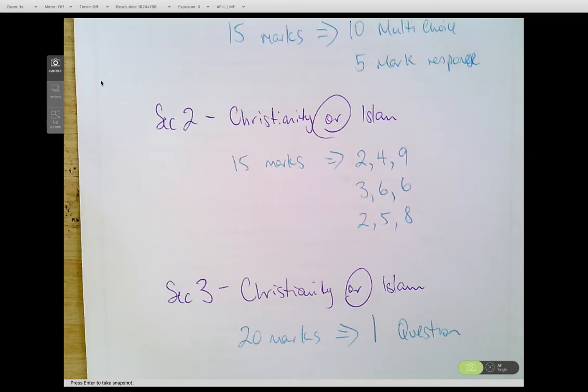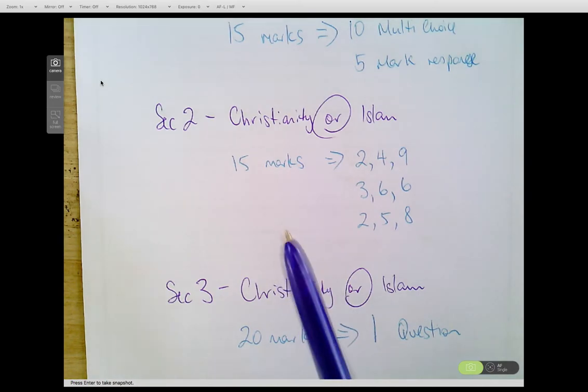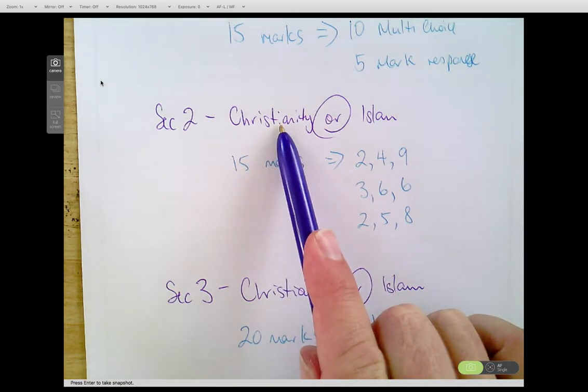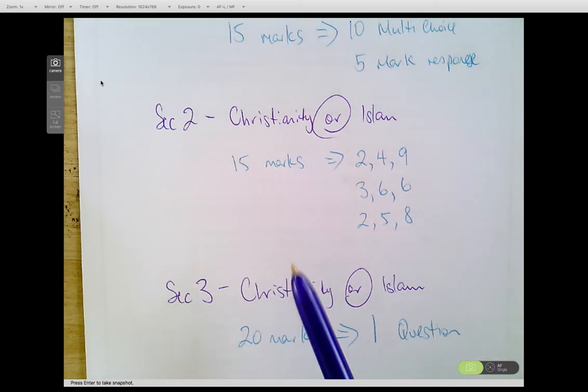We have to expect that the key verb in this is going to be explain or higher. So when we explain, we need to show cause and effect. It might ask for impact, so before and after. It might ask to discuss, so it's two sides of something, or it might ask us to make a judgment. Okay, so you need to think what am I going to do, because you are not allowed to do Christianity in Section 2 and Christianity in Section 3. You have to do the opposite. Whatever you choose in Section 2, you do the opposite in Section 3.